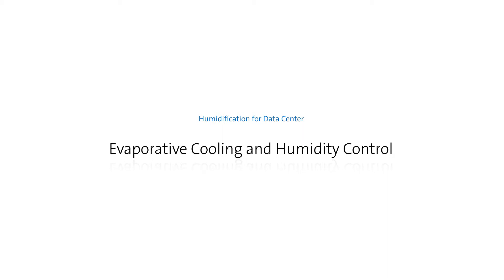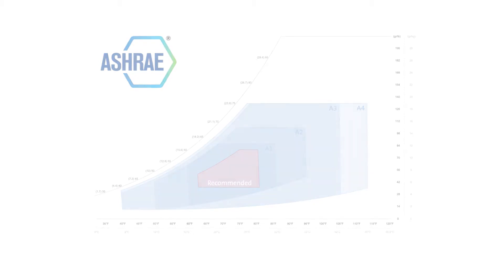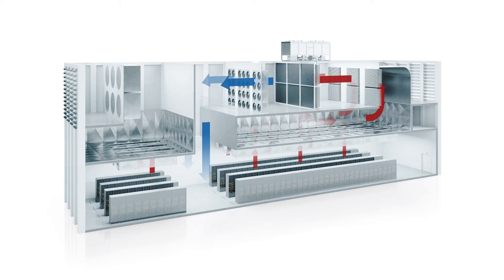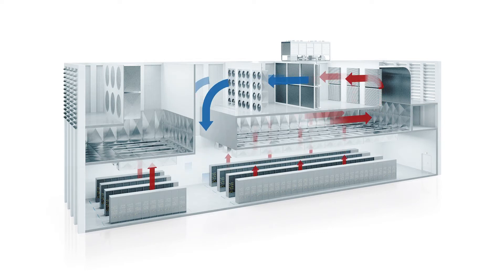Evaporative cooling and humidity control for data centers. Since ASHRAE expanded its guidelines on air conditions for data centers, cooling strategies have mostly focused on using large volumes of outdoor air to cool data halls, rather than compressor-driven chillers. This trend has led to much lower power usage efficiencies for the industry, and many newly constructed hyperscale data centers being located in colder climates to take advantage of this economic cooling technique.